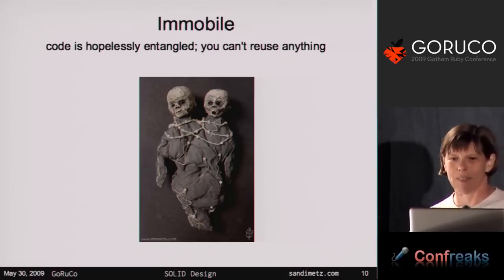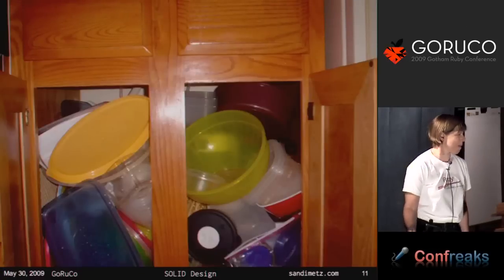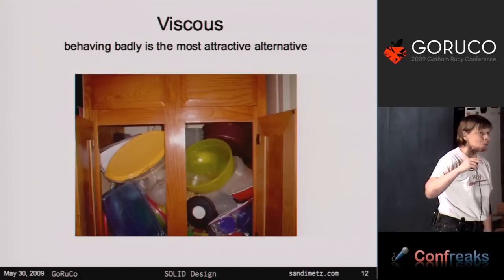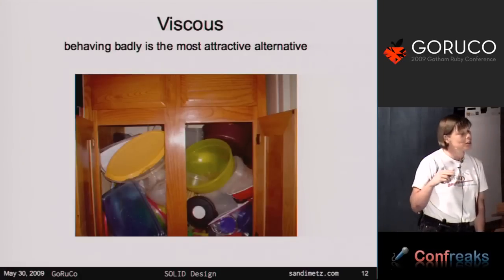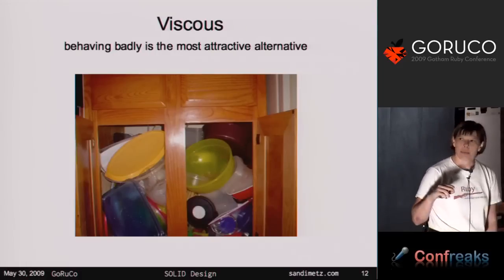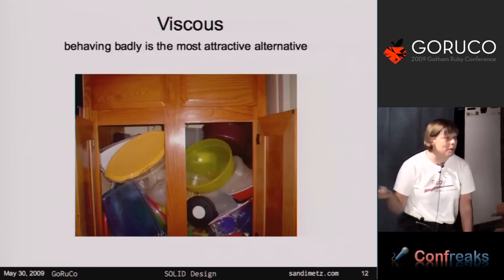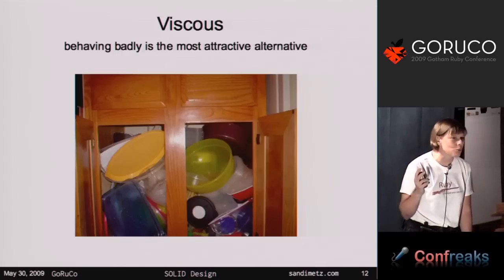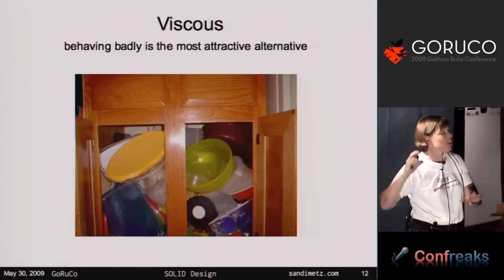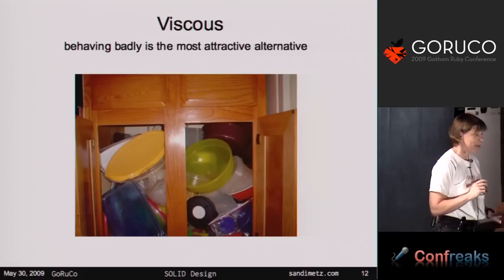Immobility. And finally, there's viscosity. Viscosity is when you want to make a change, you can tell how the original designer wanted you to behave, but it's easier to do the wrong thing. So in this case, you just throw another piece of Tupperware in that cabinet, shut the door, and tiptoe away. You try not to pay attention when the door opens and stuff falls out on the floor on someone else.